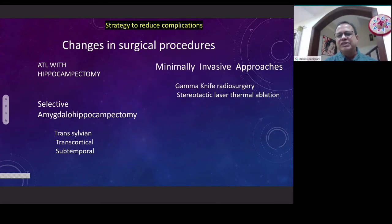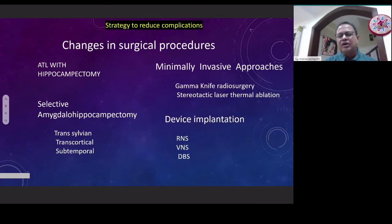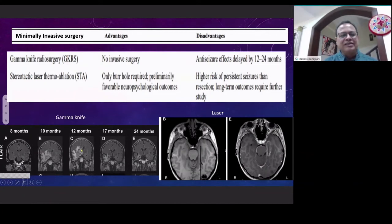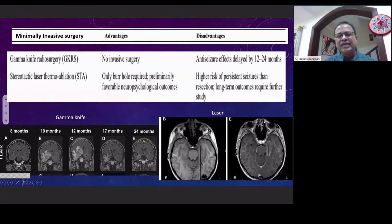For minimally invasive procedures, people thought that with gamma knife surgery — without touching the patient — we could do treatment, or do a stereotactic laser thermal ablation with just a burr hole. However, when you give gamma knife radiation, the area develops edema that persists for one year and takes two years to come down. During this two-year period, the seizure frequency can increase, which is a major morbidity for the patient. It takes almost two years to have any seizure reduction with gamma knife, so that is not a good way of treatment. The laser treatment, where one places an electrode in the hippocampus and does thermal coagulation, looks appealing, but the chances of seizure reduction are very low and long-term outcomes are yet to come.